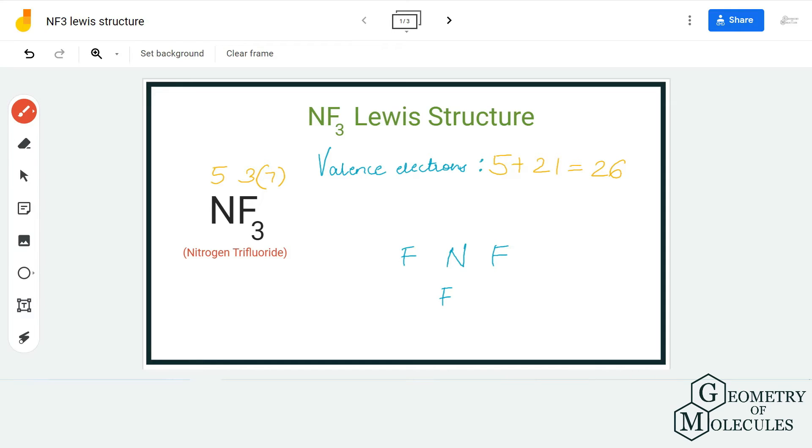Once you have done this and you know the number of valence electrons, you can place the nitrogen in the center and all the fluorine atoms will be arranged around it. Because fluorine is more electronegative than nitrogen, and nitrogen is the least electronegative atom, we are going to place it in the center.